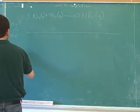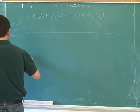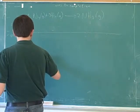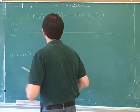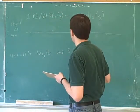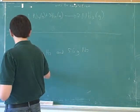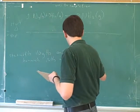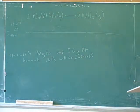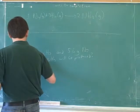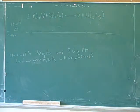So let's say we start with 10 grams of hydrogen and 56 grams of nitrogen. If the reaction goes to completion, how many grams of ammonia will be produced?